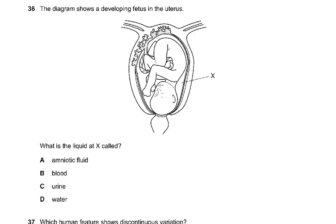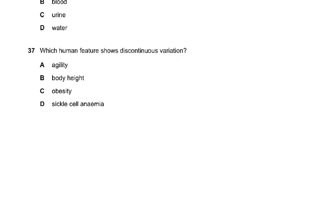Question number 36: the diagram shows the developing fetus in the uterus. What is the liquid at X called? It is called amniotic fluid — it can't be blood, urine, or just water. The name of that fluid is amniotic fluid.